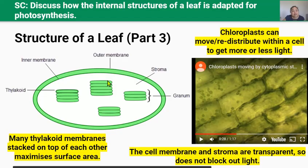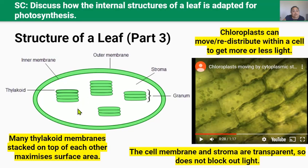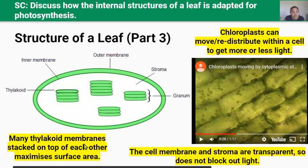The thylakoid membranes are stacked on top of each other, and the stack is called the grana. This increases the surface area available for light absorption. Also, the stroma surrounding the structures is transparent, meaning it doesn't block out light. So sunlight entering the chloroplast that doesn't hit a thylakoid membrane can keep going to the next chloroplast.